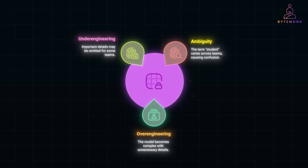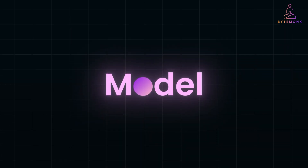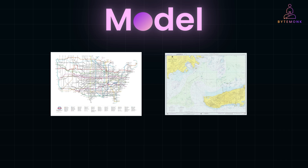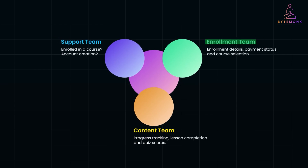We learned about the concept of models through maps in the previous video. Just like maps are useful only within their specific purpose — such as subway maps for navigating train routes or nautical maps for marine navigation — a model is relevant only within the boundaries of its context. For example, the enrollment team should not track lesson progress, as it is irrelevant to its purpose. Similarly, the learning team doesn't need to deal with payment statuses, as it adds unnecessary noise. When the same term is interpreted differently, teams struggle to stay aligned. Engineers may implement features based on one team's understanding, only to find that it breaks the workflow for another. Trying to mix attributes from different contexts leads to overcomplication.